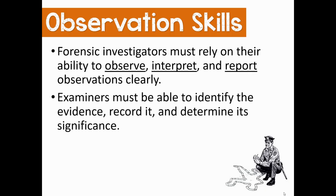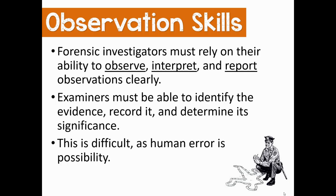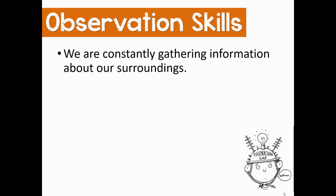For example, forensic examiners have to be able to identify evidence — find it through their observations, record it, and determine its significance. Is this something significant to solving the crime, or is it what we call extraneous evidence? This is often difficult because human error is always a possibility. The brain is just not designed to take in all the information that bombards us every day, and as a result, investigators can make faulty perceptions.